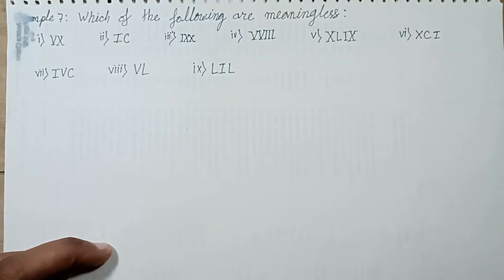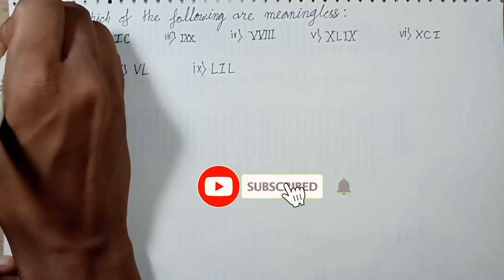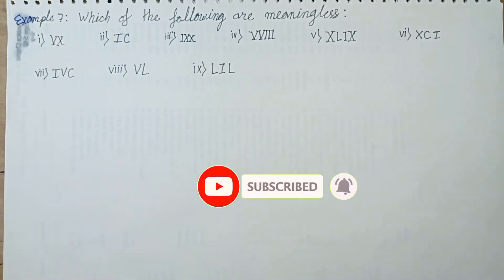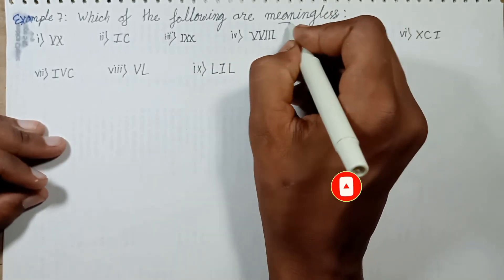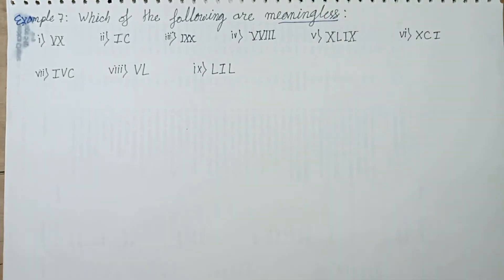Good day everyone. Welcome back to this episode. Today's episode discusses example number 4, example number 7 — which is following or meaningless? The total number of questions is 9. Let's solve them one by one and explain why each number is meaningless.